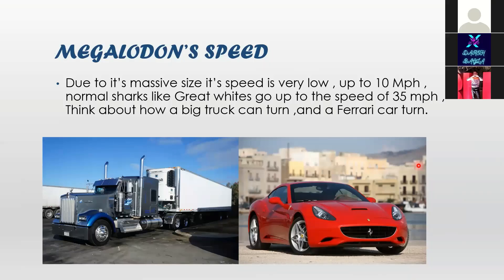Megalodon's speed: Due to its massive size, its speed was very low — up to 10 miles per hour. Normal sharks like the great white can go up to 35 miles per hour. Think about how differently a big truck turns compared to a Ferrari.